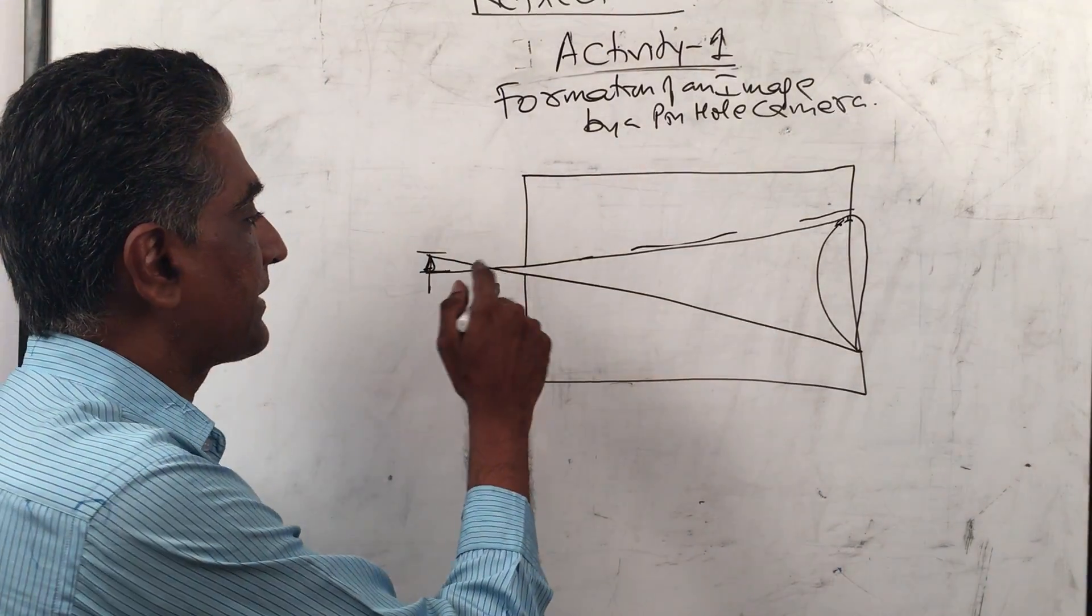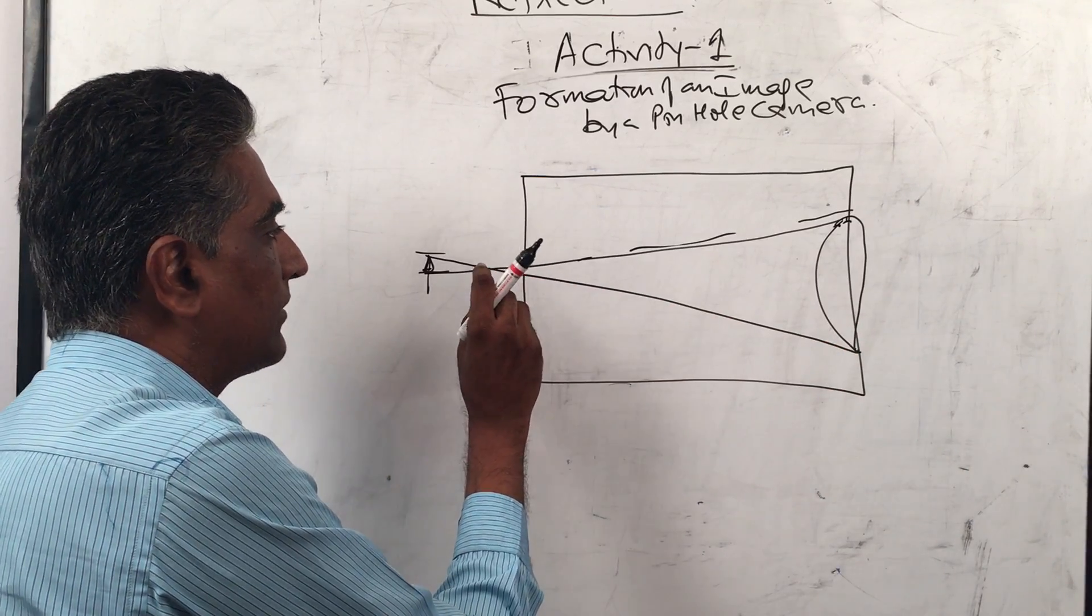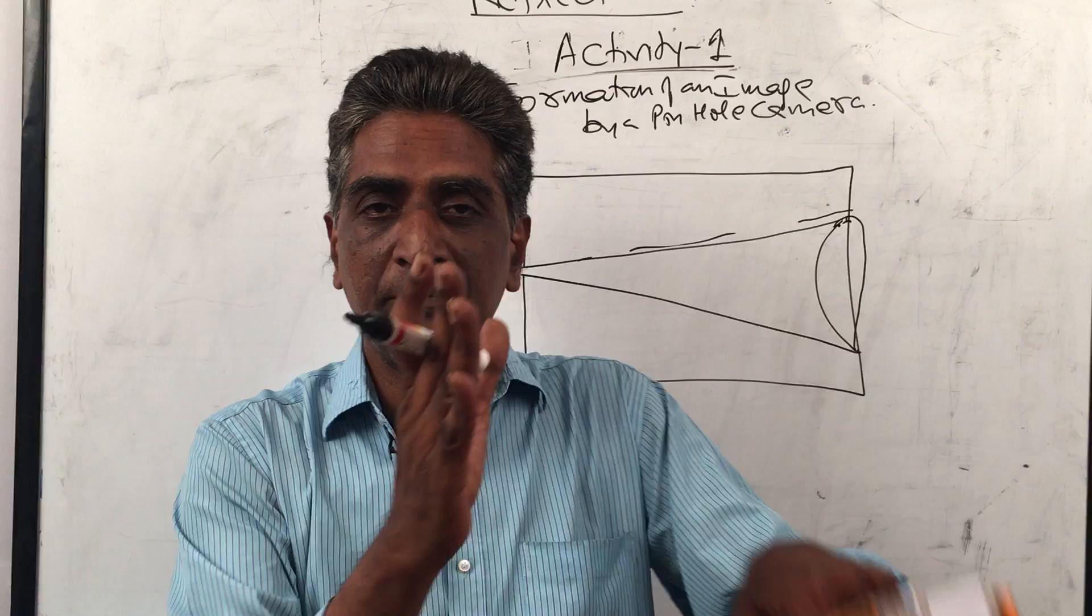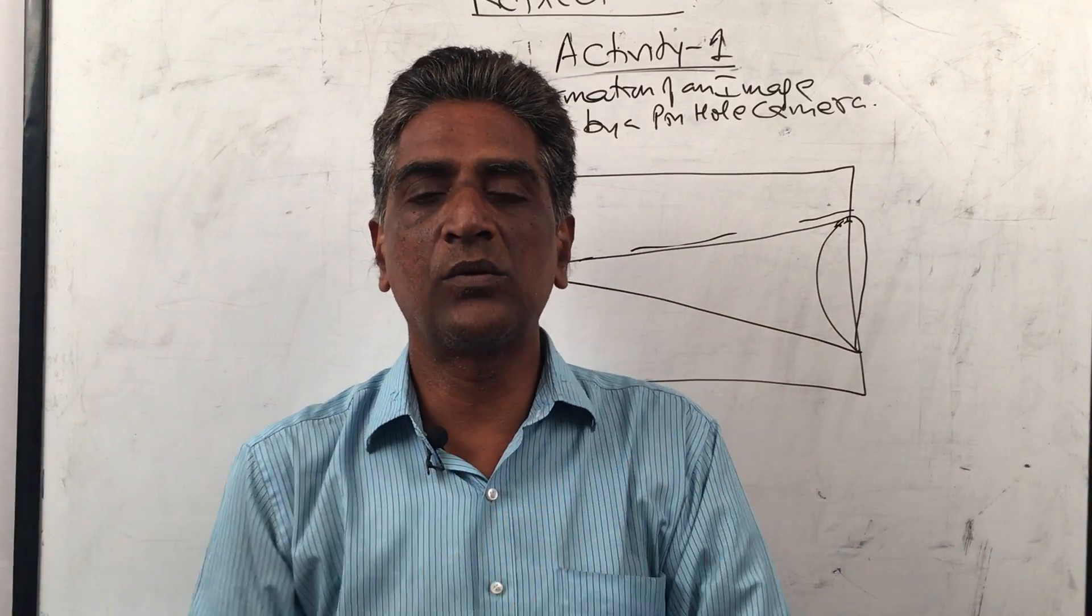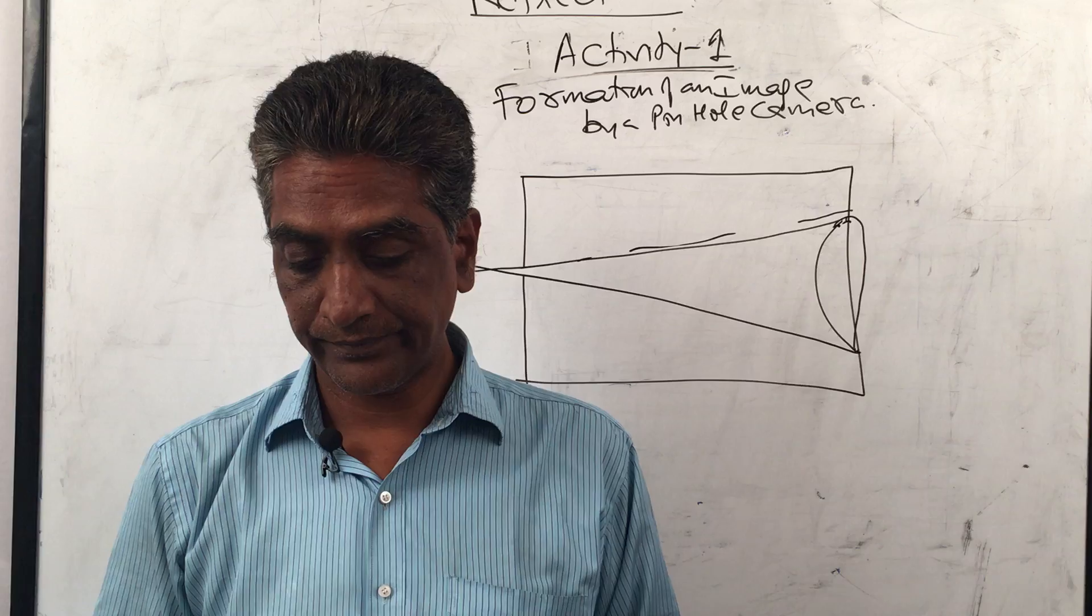So this is very interesting. If you have a small hole, the image will not be blurred. But if you make the hole big, then many rays will go there and one point will come in many different ways. So one point will come in many different ways on the screen.